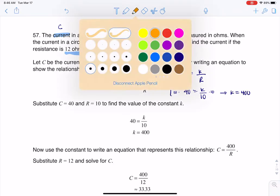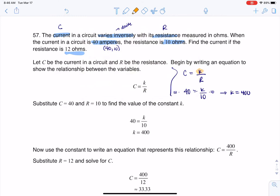So now, let me color code this. Instead of having this general k up here, I can plug in my specific number. So continuing on this, I know now C is equal to 400 over R, because my k value is 400. And now it's telling me, hey, can you plug in a resistance of 12 ohms?